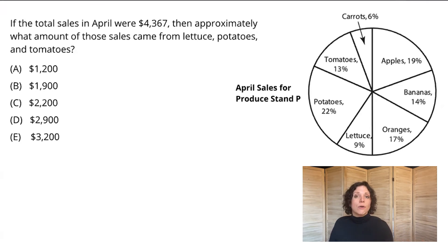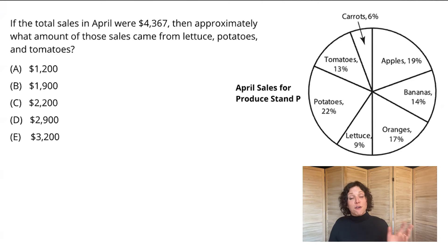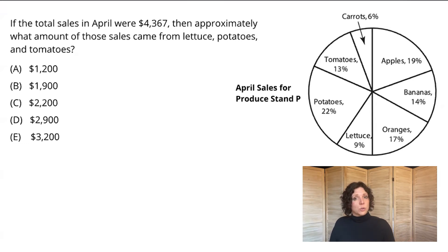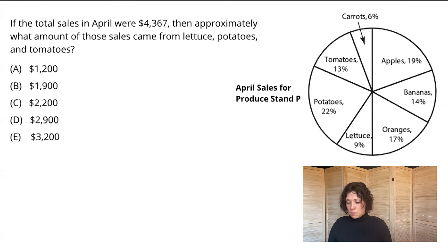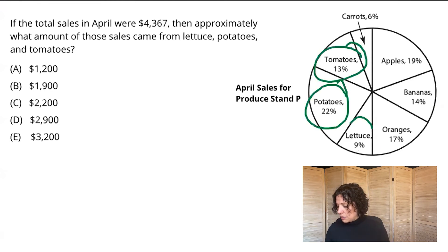These answer choices are really spread out. So now we'll move to the question itself. We're told that the total sales in April were $4,367. Total sales are $4,367 — kind of an ugly number. Then approximately, what amount of those sales came from three specific items: lettuce, potatoes, and tomatoes. Now, even if they hadn't said the word approximately, the answer choices were leading me to this estimation. But the combination of approximately with a really ugly number is like screaming estimate. So let's take a look at our graph — we're supposed to be looking for lettuce, potatoes, tomatoes.